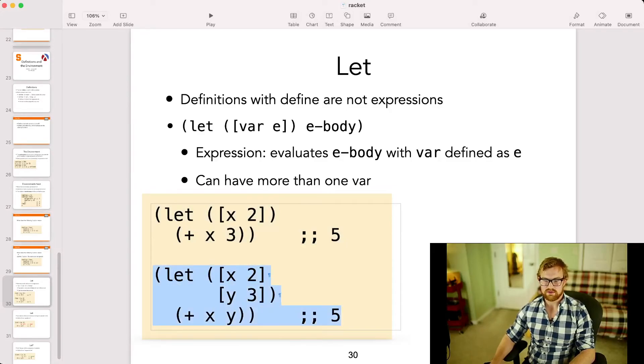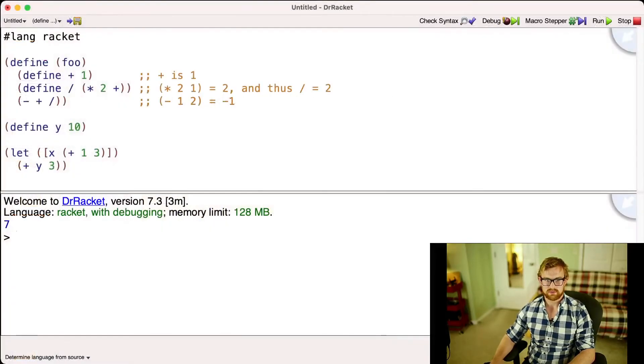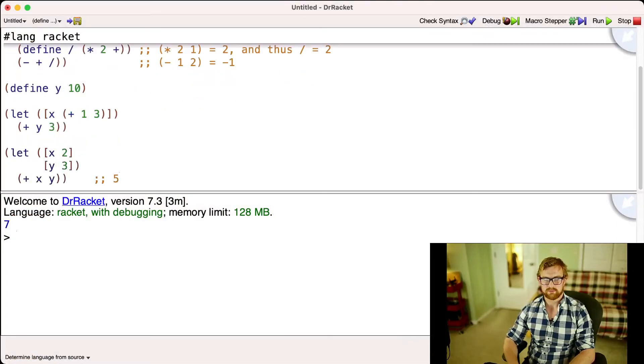Similarly, we can have more than one variable. So in this piece of code right here, I define x to be 2, and I define y to be 3. And then I say x plus y in the body, and that'll give me the result 5.